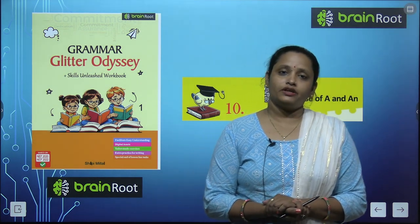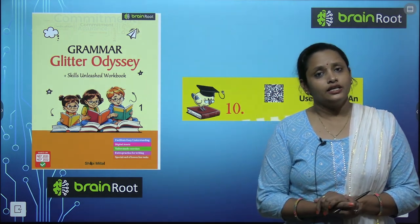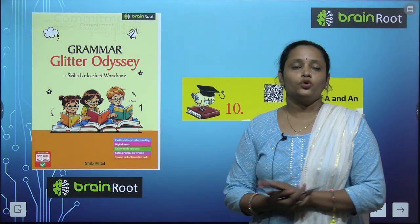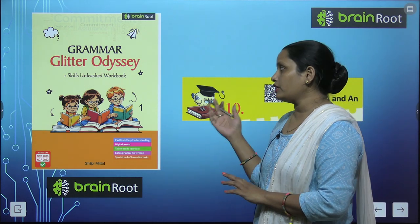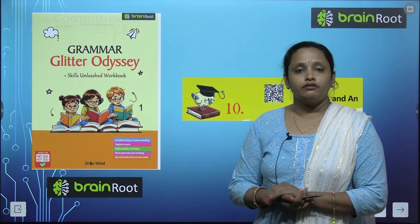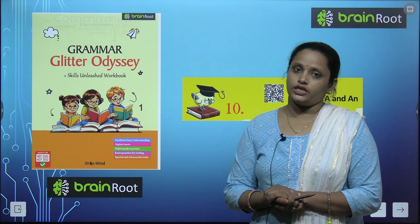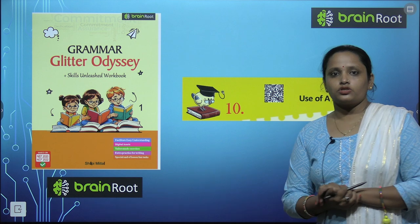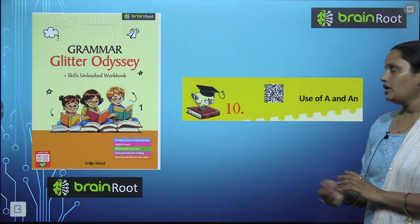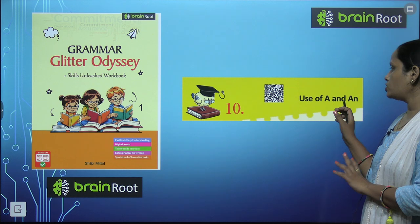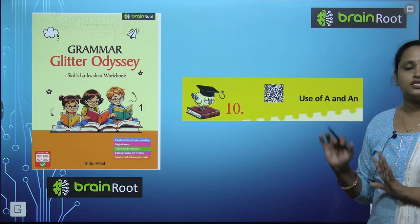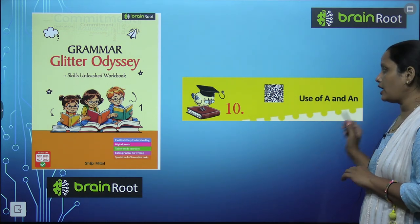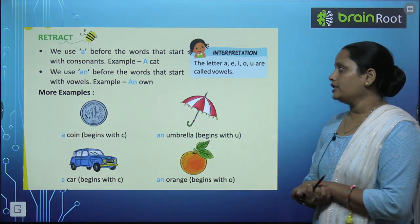Hello kids, welcome back. I am Vandana and we are learning English grammar by Brain Root series. This is a book and the name of the book is Grammar Glitter Odyssey, book 1. Today we are going to start with chapter number 10 and the name of the chapter is Use of A and An — where to use A and where to use An. This we will learn.